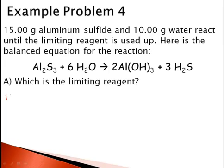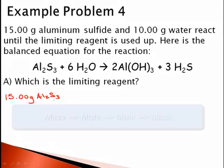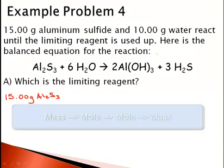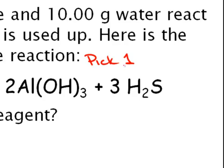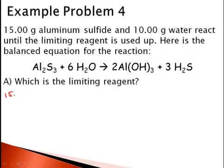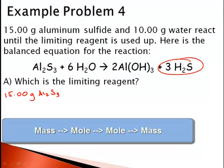So we're going to take our 15.00 grams of Al2S3 and we're going to stoic to a product. When you pick a product, just pick one. It doesn't matter. Just use the same product both times. 15.00 grams of Al2S3 and we will work to H2S. I have mass of Al2S3. I'm going to convert to moles of Al2S3.